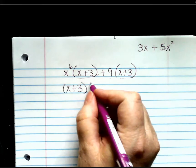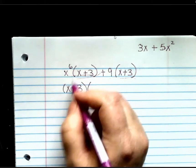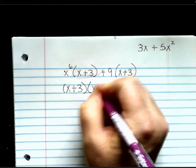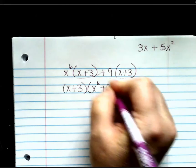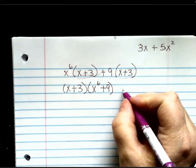Now, what's left after I pull that out? The x to the 6th plus 9. And this is called factoring by grouping.